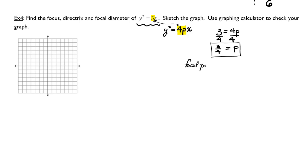The focal point is at 3 fourths, 0. The focal diameter is at the absolute value of 4 times 3 fourths, which is just 3.